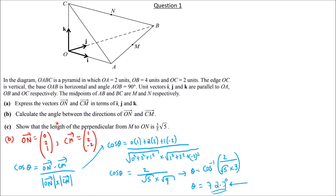Part C: Show that the length of the perpendicular from M to ON is (3/5)√5. We have point M and line ON drawn separately.